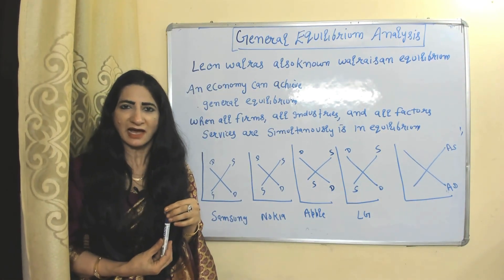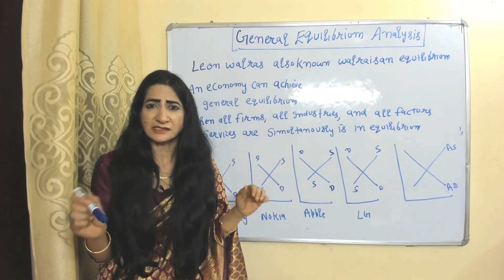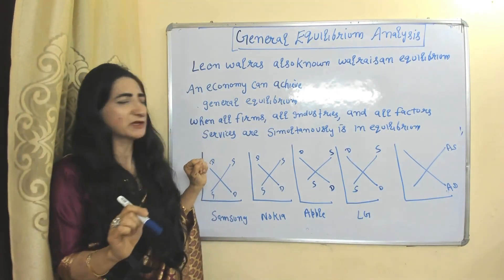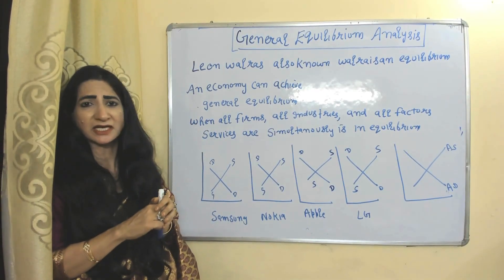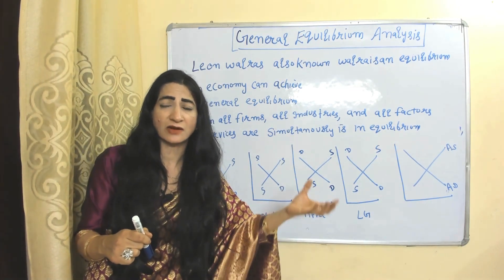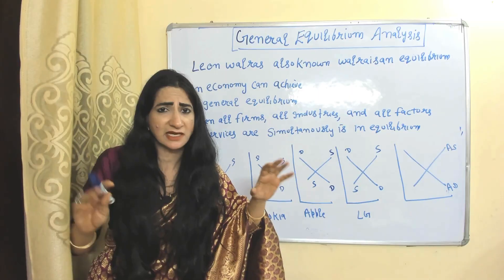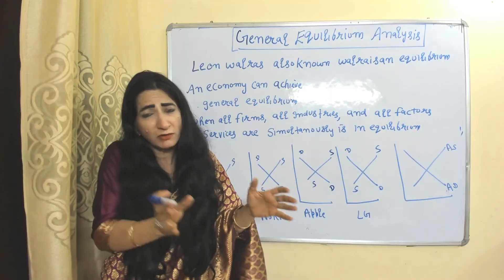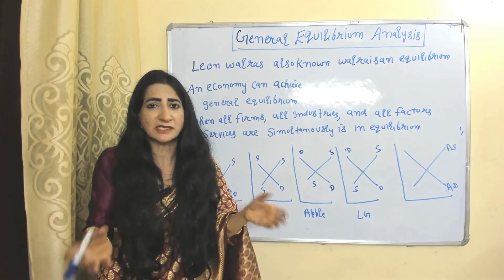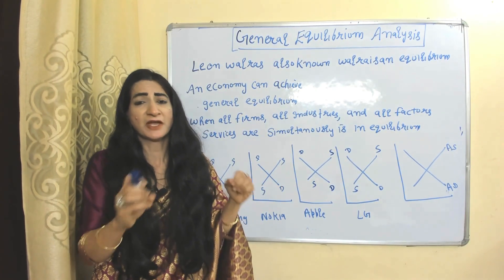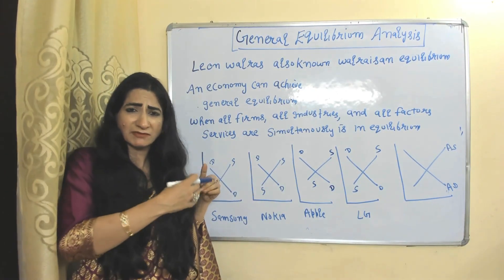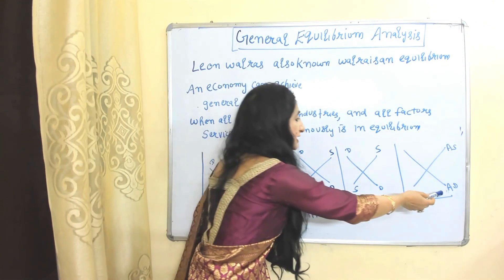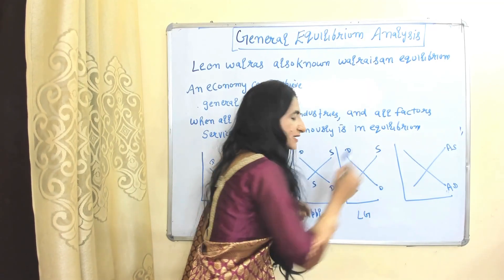General equilibrium analysis was given by Leon Walras, so it is also known as Walrasian equilibrium analysis. The economy achieves general equilibrium when all firms, all industries, and all factor services are simultaneously in equilibrium. For example, general equilibrium studies the simultaneous equilibrium of Samsung, Nokia, Apple, and LG, and concludes that aggregate demand and aggregate supply of the mobile market are equal to each other.